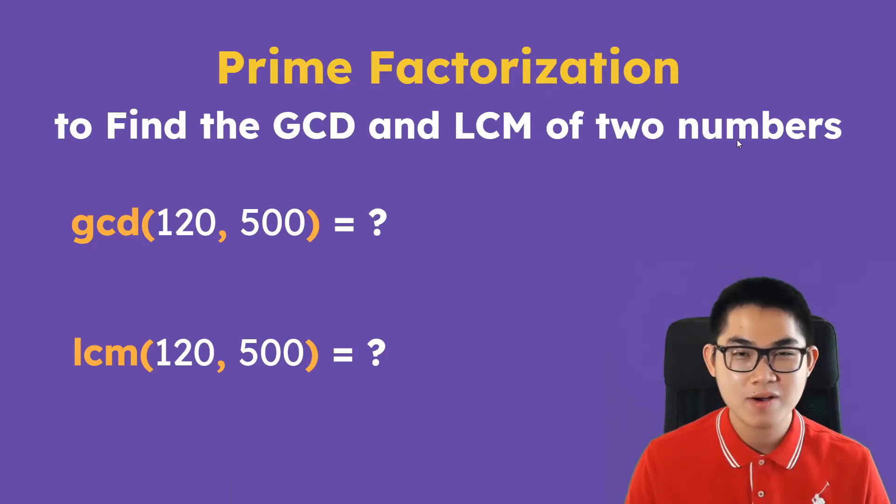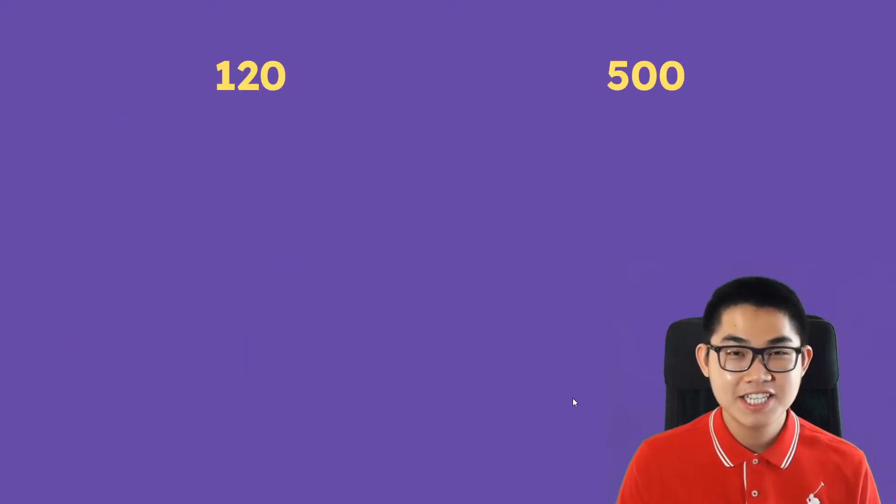So let's say we want to calculate the GCD and the LCM of 120 and 500. The first step is to do prime factorization.